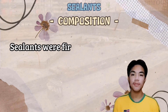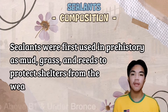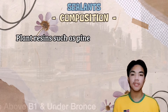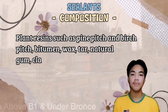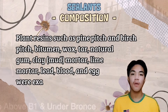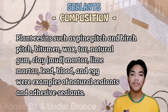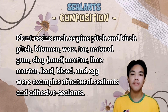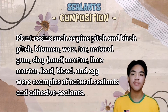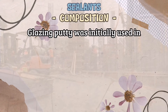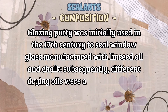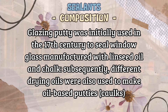Sealants were first used in prehistory as mud, grass, and reeds to protect shelters from the weather. Plant resins such as pine pitch and birch pitch, bitumen, wax, tar, natural gum, clay mortar, lime mortar, lead, blood, and egg were examples of natural sealants. Glazing putty was initially used in the 17th century to seal window glass, manufactured with linseed oil and chalk.